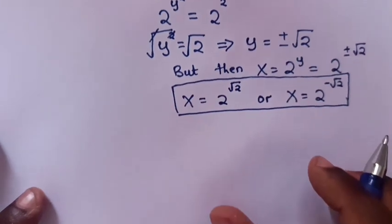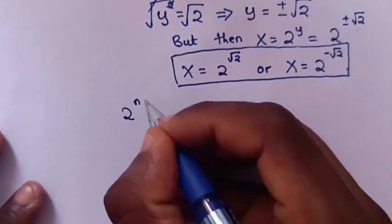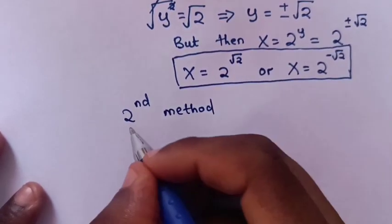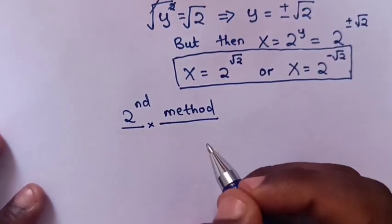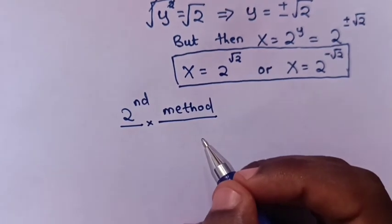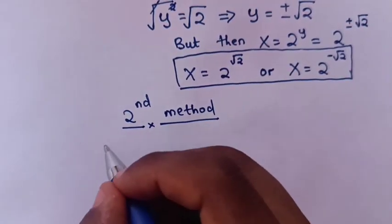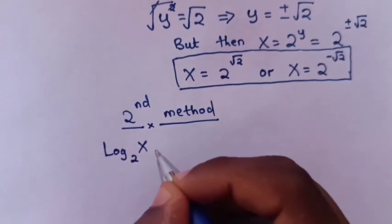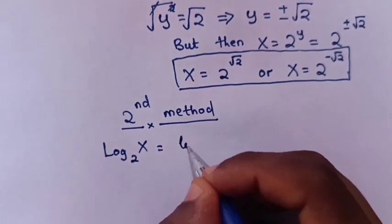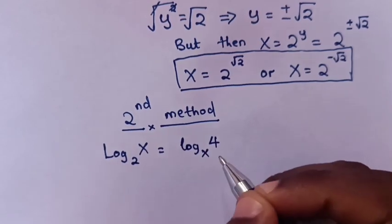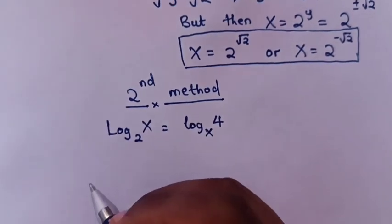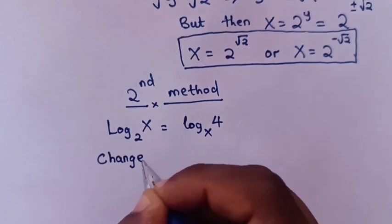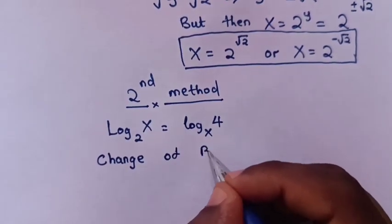Now let's go to the second method. From our question, log x base 2 equals log 4 base x. To find the value of x, we will apply the method of change of base.